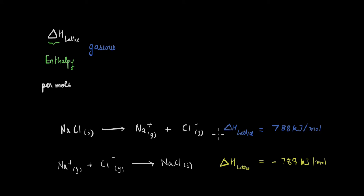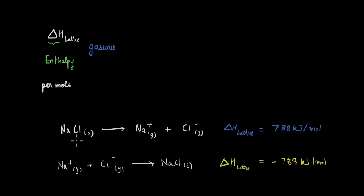Calling both of them lattice enthalpy can be confusing, so a better way to think about it is: the case where NaCl dissociates to give sodium and chloride ions is called lattice dissociation enthalpy, and the case where these ions form NaCl is called lattice formation enthalpy. The enthalpy is positive for dissociation and negative for formation.